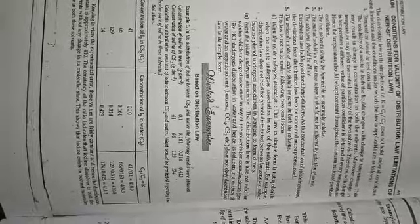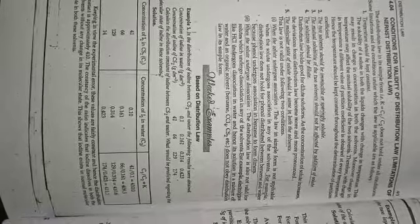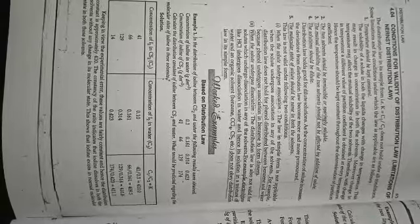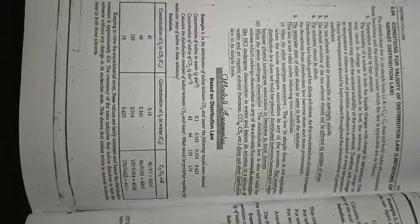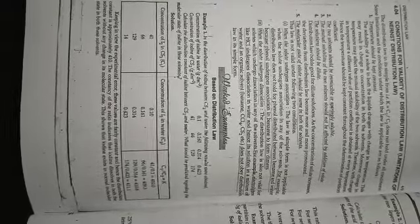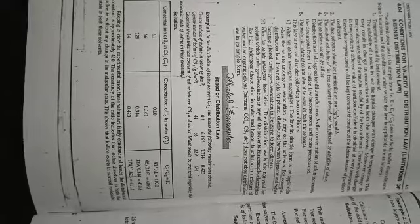Distribution constant values: first condition = 410.0, second = 409.3, third = 410.8, fourth = 411.1. Keeping in view experimental error, these values are fairly constant; hence the distribution constant is approximately 410. The constancy of the ratio indicates that iodine dissolves in both solvents without any change in its molecular state, showing that iodine exists in its normal molecular state in both solvents.